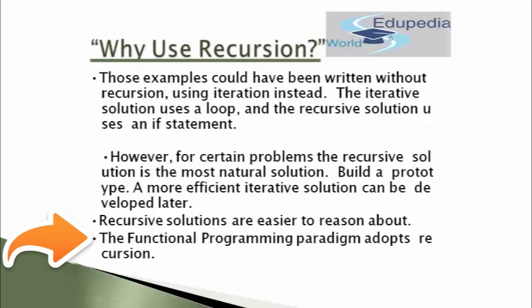When to choose recursion versus iteration depends on the situation. If there are a huge number of local variables being used, recursion is usually not a good choice, because each time the function is called a stack of that function will be built in memory and those variables will take up space. For example, if you call the function 10 times and it uses five variables, those five variables will be recreated for each recursive call, whereas in iteration this doesn't happen. Use recursion when you have fewer data elements and fewer variables, so that the memory stack doesn't get very large.